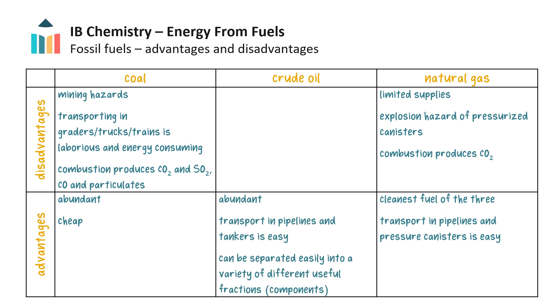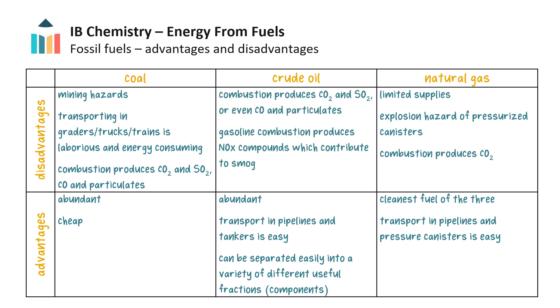Abundant crude oil can be easily piped and separated into a variety of useful components, like gasoline, which has a high energy output. But burning these compounds releases carbon dioxide, acid rain causing pollutants, and smog forming nitrogen oxides. Of the three, natural gas produces the most energy per unit mass.